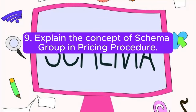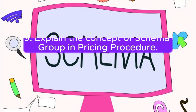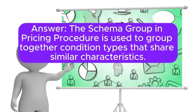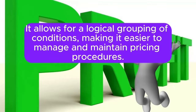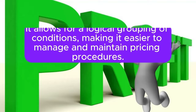Question 9: Explain the concept of schema group in pricing procedure. Answer: The schema group in pricing procedure is used to group together condition types that share similar characteristics. It allows for a logical grouping of conditions, making it easier to manage and maintain pricing procedures.